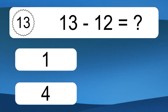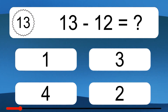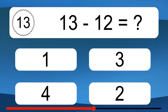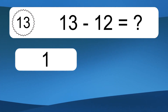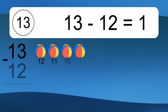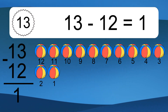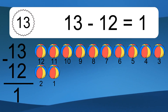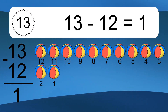13 minus 12 equals what? 13 minus 12 equals 1. Let's count it: 12, 11, 10, 9, 8, 7, 6, 5, 4, 3, 2, 1.